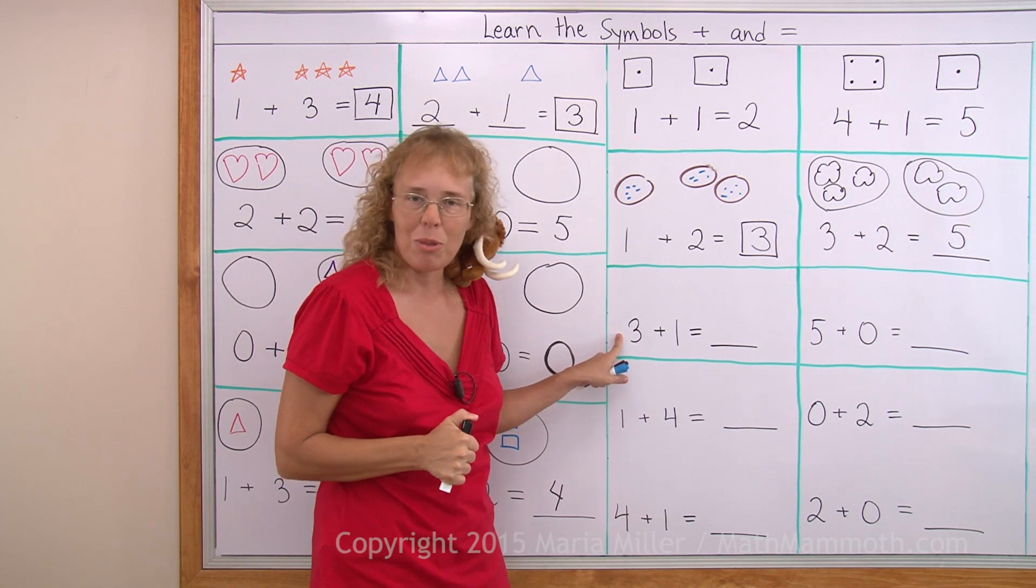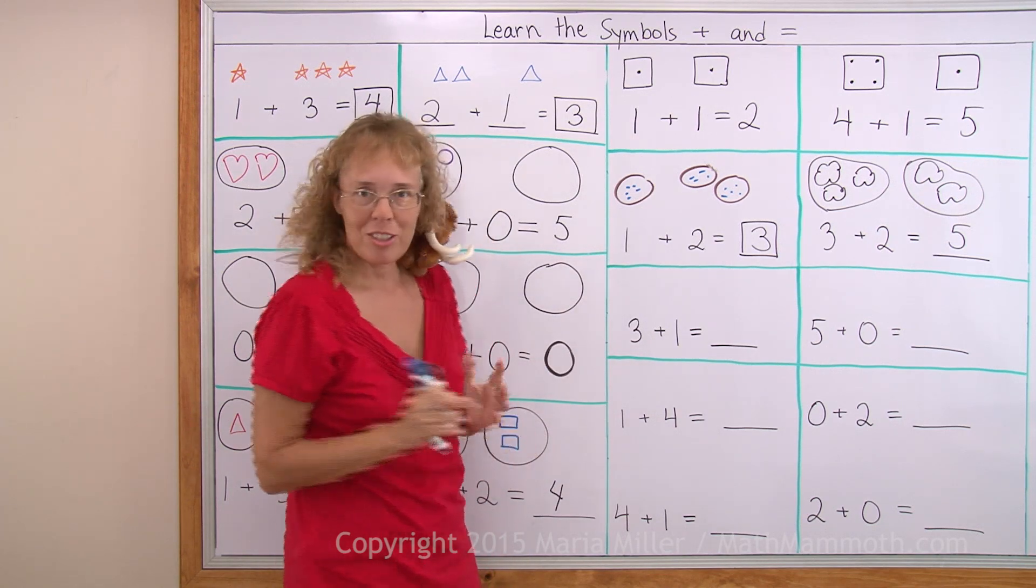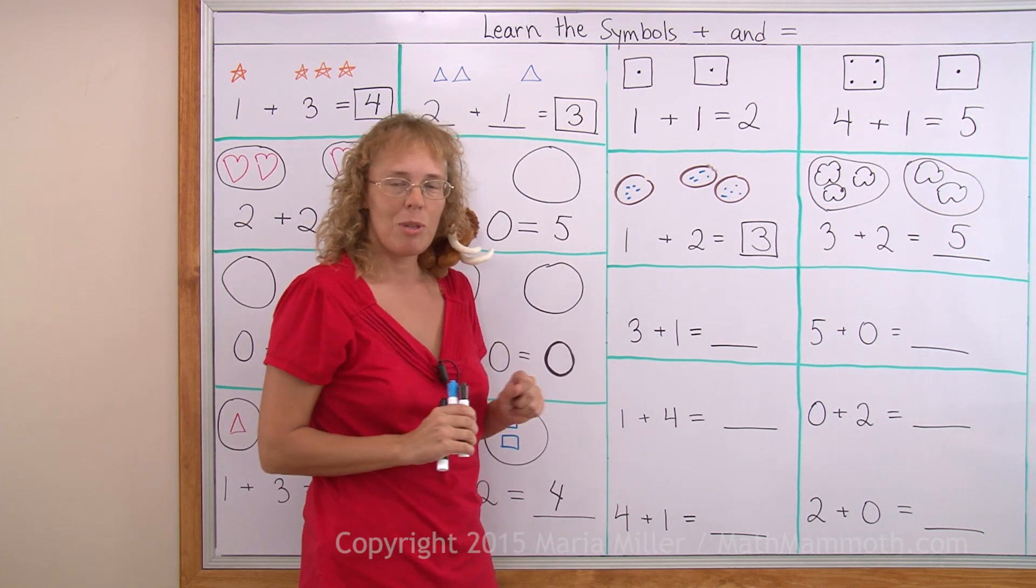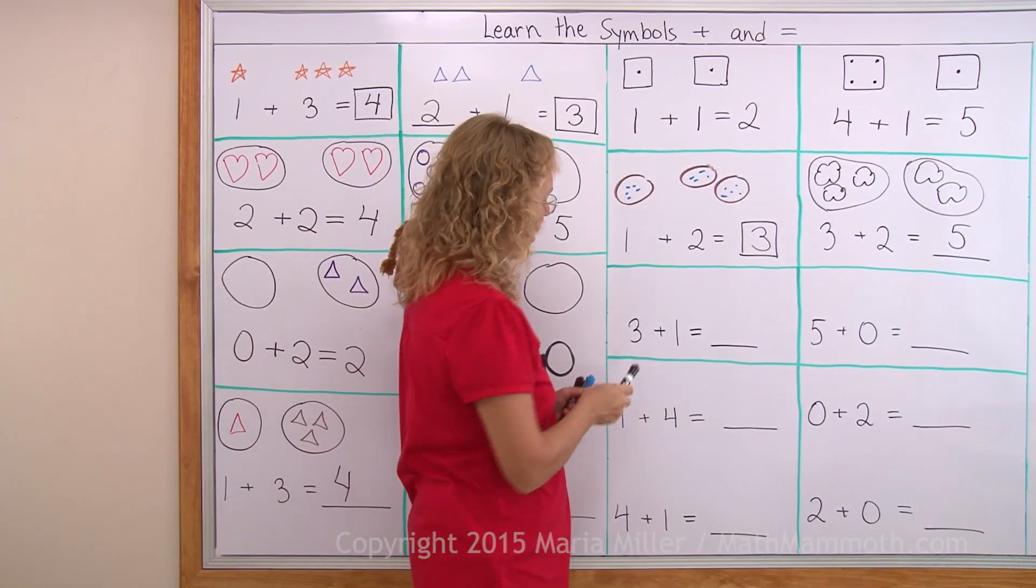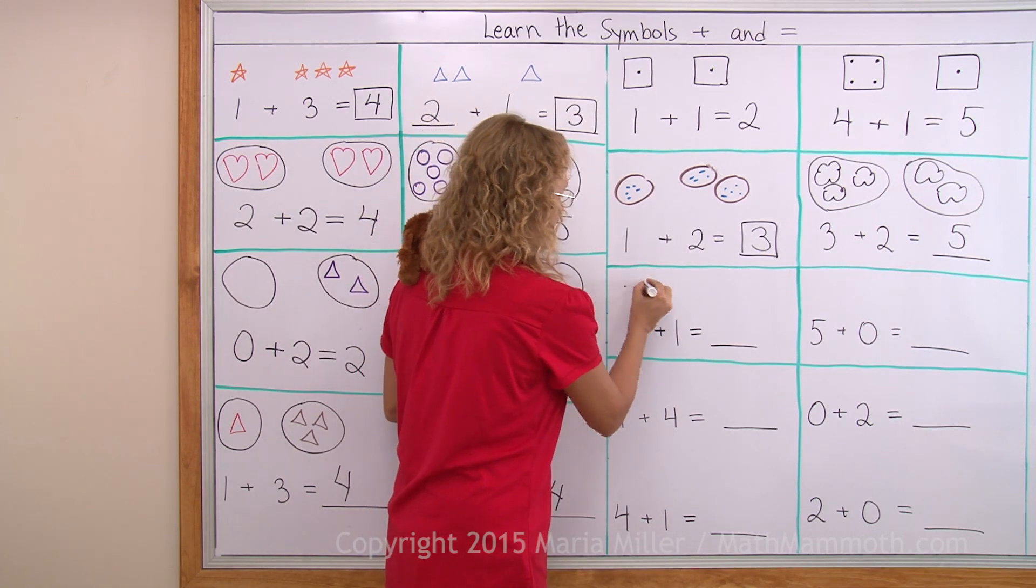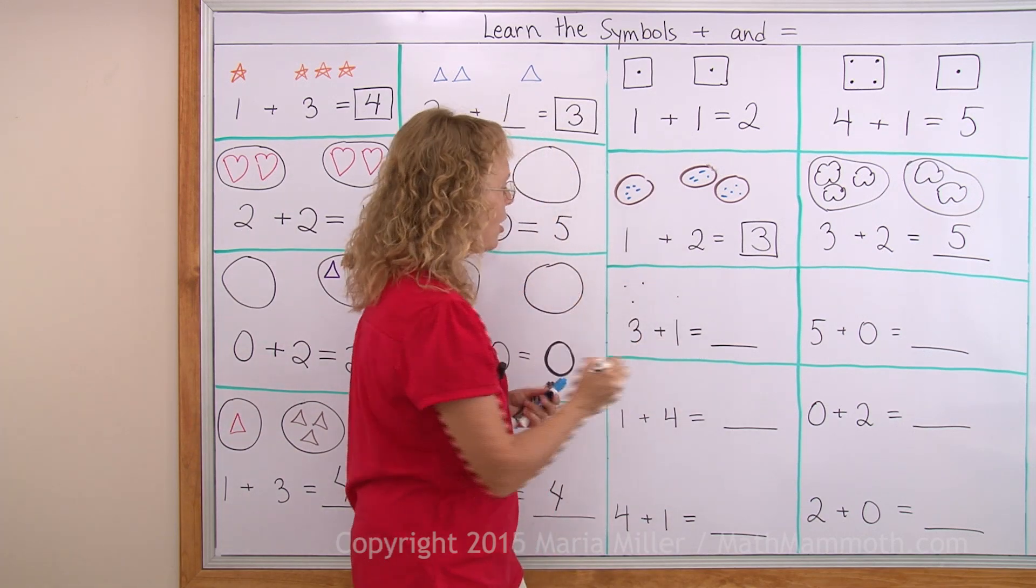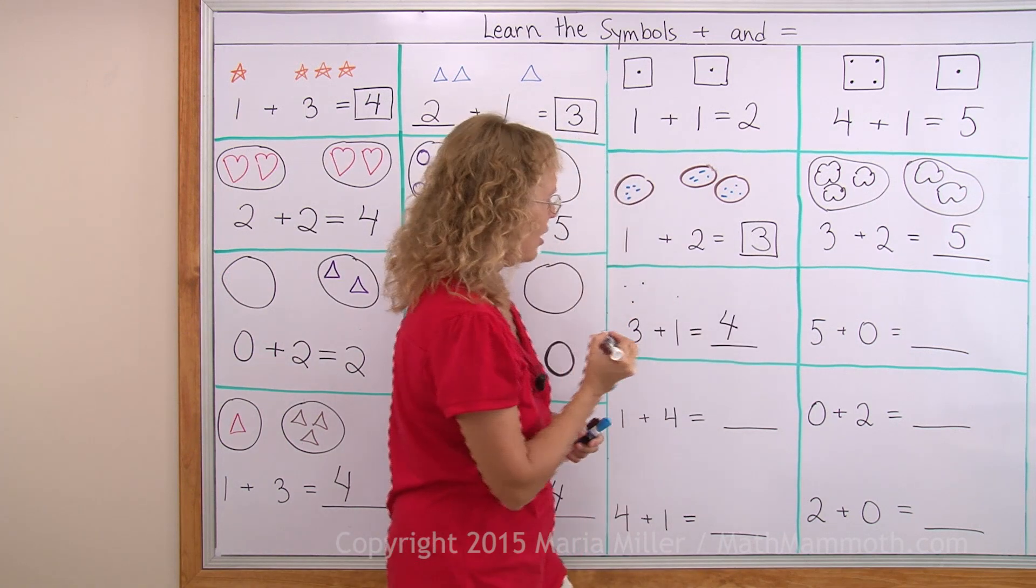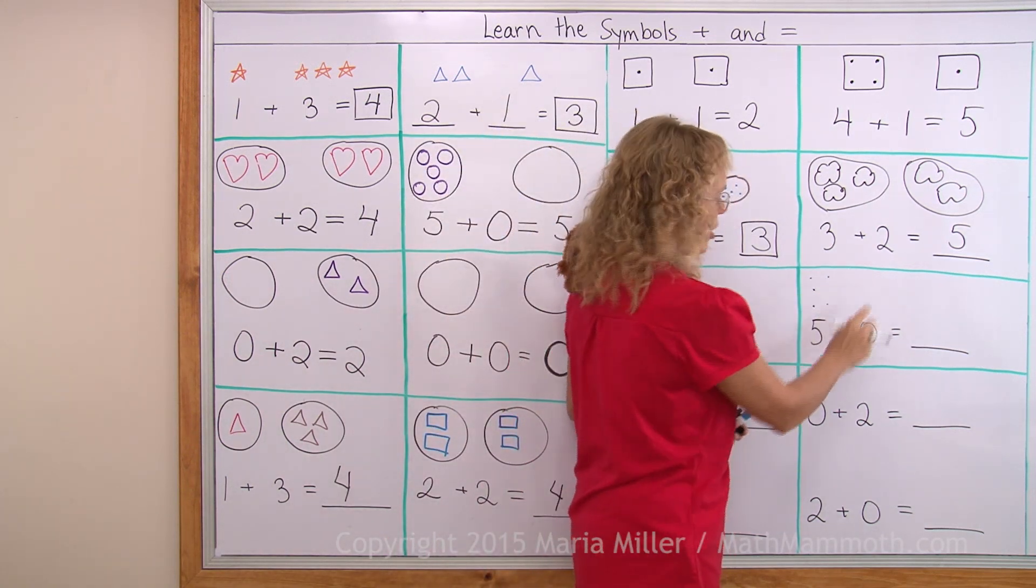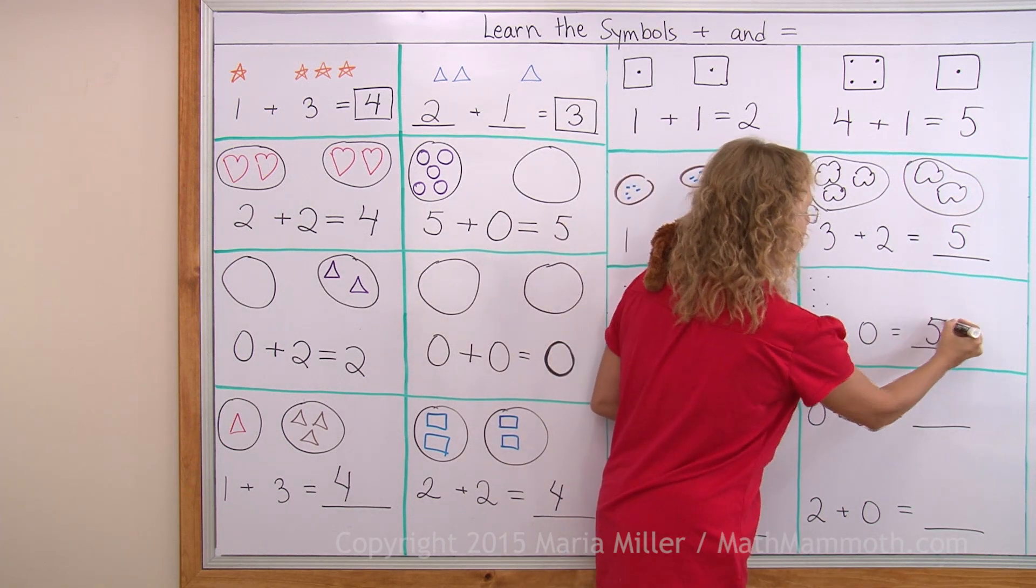Try these addition problems yourself. Pause the video. Try if you can solve them without drawing. Or maybe you can draw dots in your mind. Three plus one. I could draw to help me. Three dots and one dot. The total is four dots. Over here. Five dots and no dots. For zero, total is five. Did you get the same?